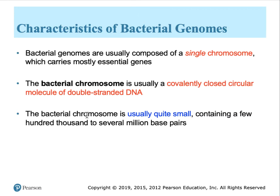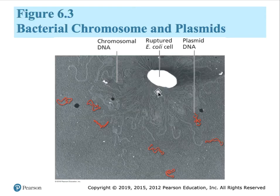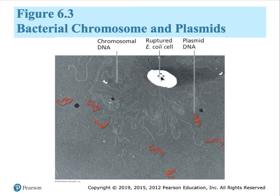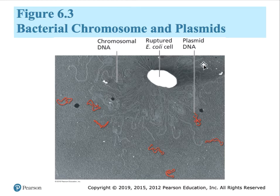The bacterial chromosome, in comparison to ours, is usually quite small, possessing from a few hundred thousand base pairs to several million base pairs depending on the bacterial species. In this particular figure, we can see the original bacterial cell in white. That cell has been ruptured by using detergents, allowing the DNA in its nucleoid to spill out into the environment. We can see the DNA — the single chromosome — with its many loops.